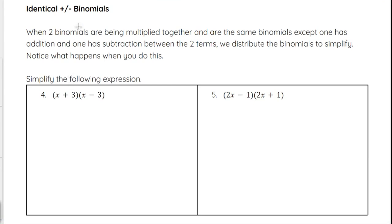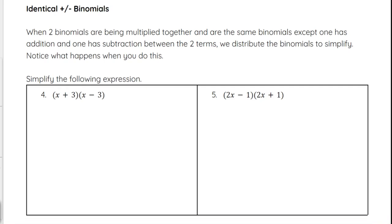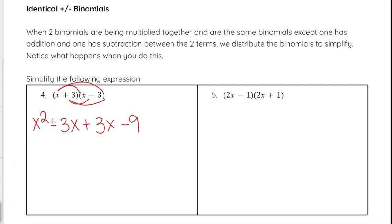Identical plus-or-minus binomials means the same binomial but one has addition and one has subtraction — it doesn't matter which order. When we distribute (x plus 3)(x minus 3): x times x is x squared, x times negative 3 is minus 3x, 3 times x is plus 3x, and 3 times negative 3 is minus 9. Combining like terms, negative 3x plus 3x equals zero — those go away — and we're left with x squared minus 9.